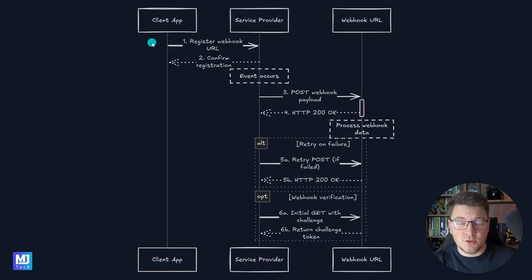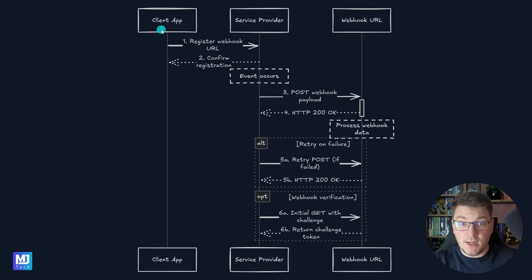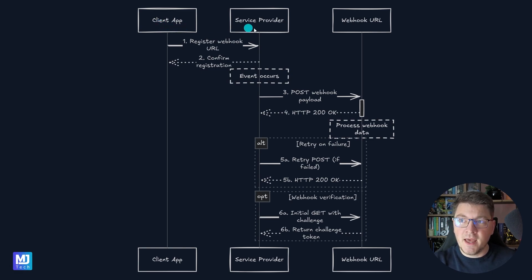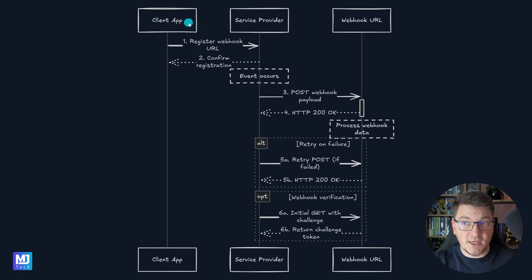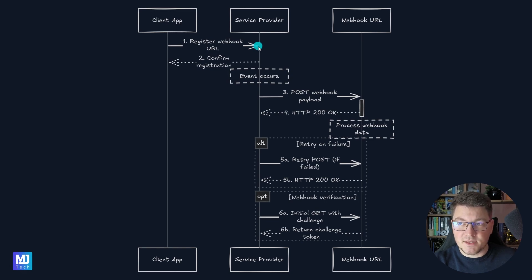I'll start by explaining what webhooks are and how you can use them. Let's say that we have two applications: a client application — and this could be a backend service, it doesn't have to be a client-side application — and a service provider, which is the actual API or service that we are building and offering a webhook. The client registers for a webhook that we are providing and gives us a URL where we can send the webhook when something happens.